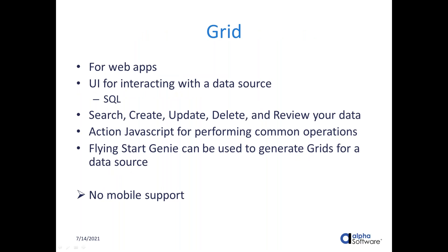The grid is a component in Alpha Anywhere that's been around for a while. It's predominantly used in web apps; desktop users can also use it, but it's not good for mobile — it doesn't support mobile interaction. If you're looking at a web app with a SQL database backend, either to search a customer database or maintain product information, a grid is a very good choice. It provides functionality for searching, creating, updating, and deleting records, and has action JavaScripts for common operations. It's one of two component types you can create using the Flying Start Genie.